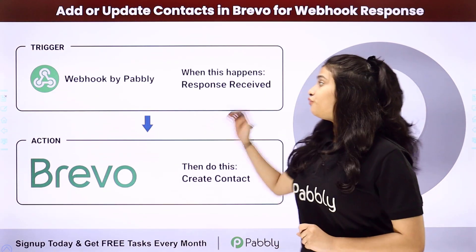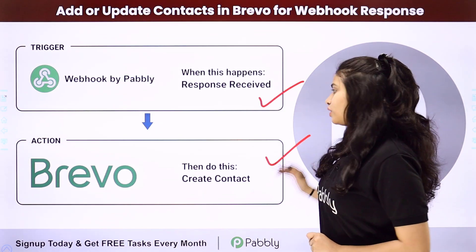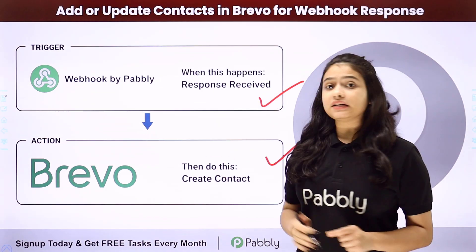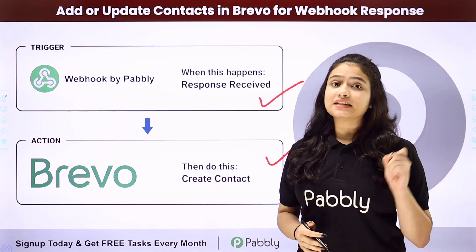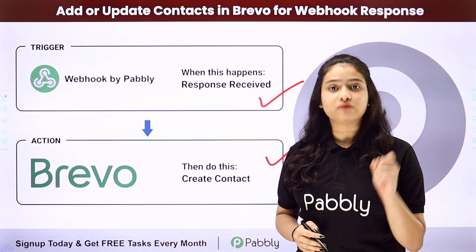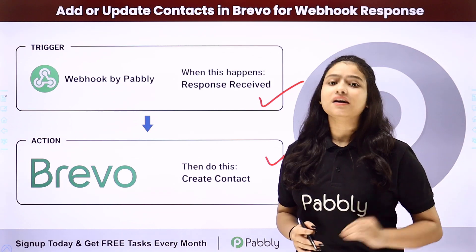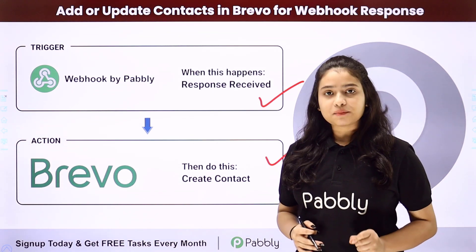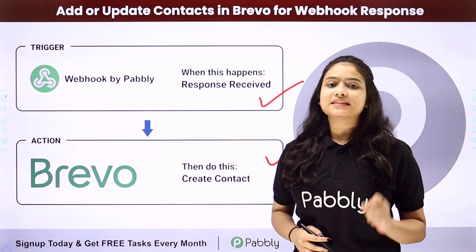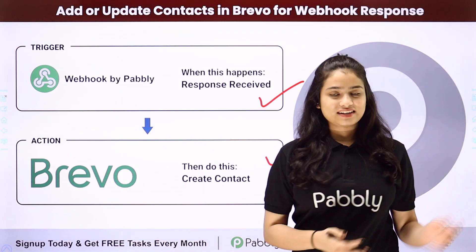We have webhook by Pabbly in our trigger and we have Brevo in our action. We will be connecting both of them in such a way that whenever a new response is captured in webhook, automatically a new contact will be created using the same response in our Brevo. To learn this full process step by step, let me take you to my screen.